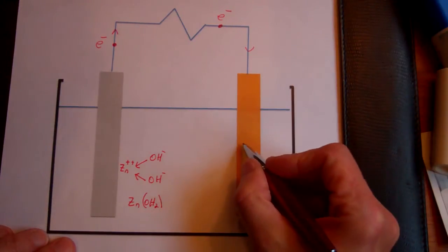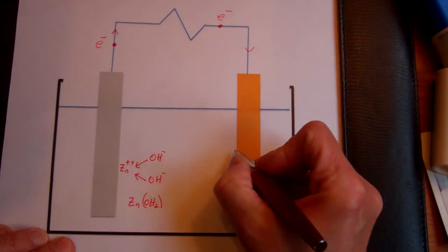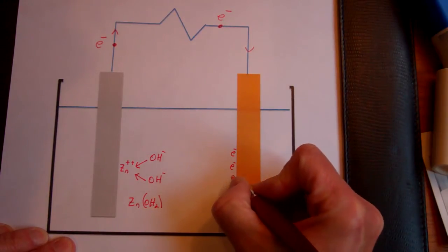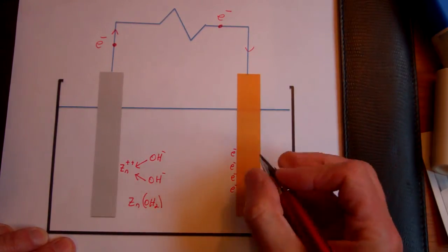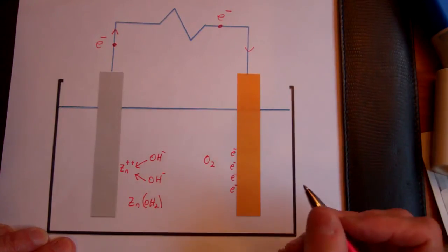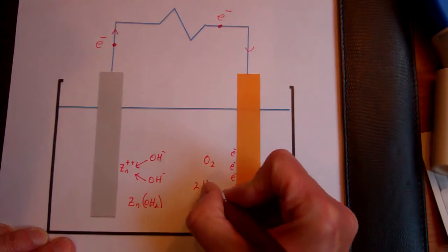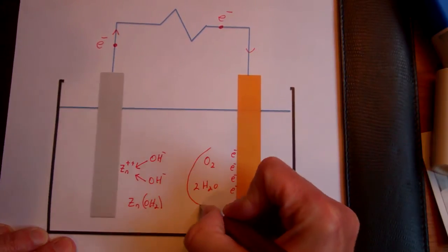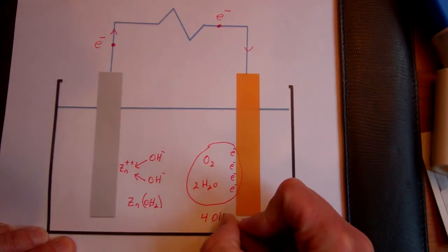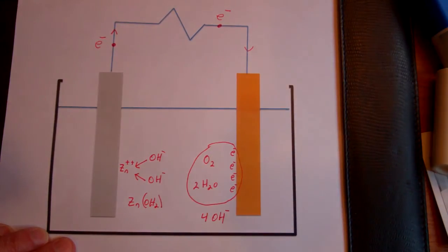At the copper solution interface, four electrons from the copper combined with dissolved oxygen molecule in the water plus two water molecules to form four hydroxide ions in the solution.